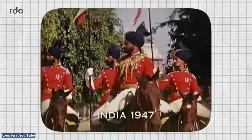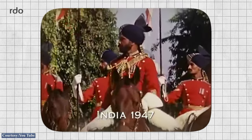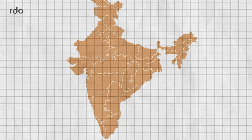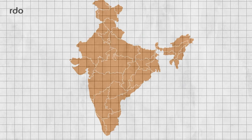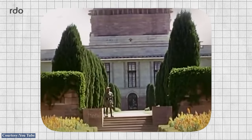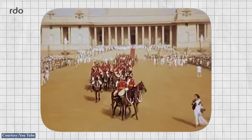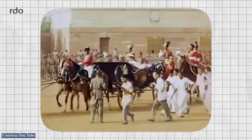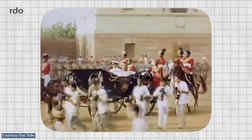On 15 August 1947, India became an independent state free from British colonial rule. The Trade Fair Authority of India had to create a permanent exhibition hall to hold an international trade fair in Delhi.